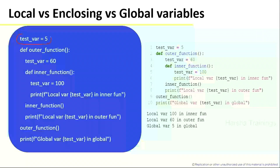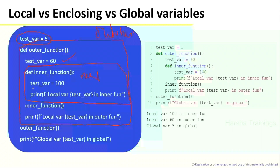Let us look at a small program carefully. I have taken a variable test_variable equal to 5. Then I have an outer function. Within the outer function I'm creating one more function called inner function. Inside the outer function I have test_variable equal to 60, and within the inner function I have test_variable equal to 100. Now if I want to print test_variable within the inner function, what will it print — is it 100, 60, or 5?